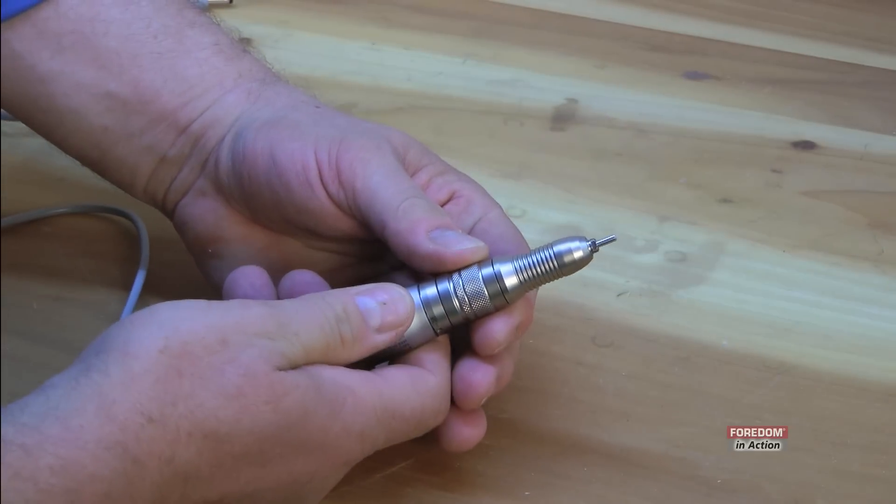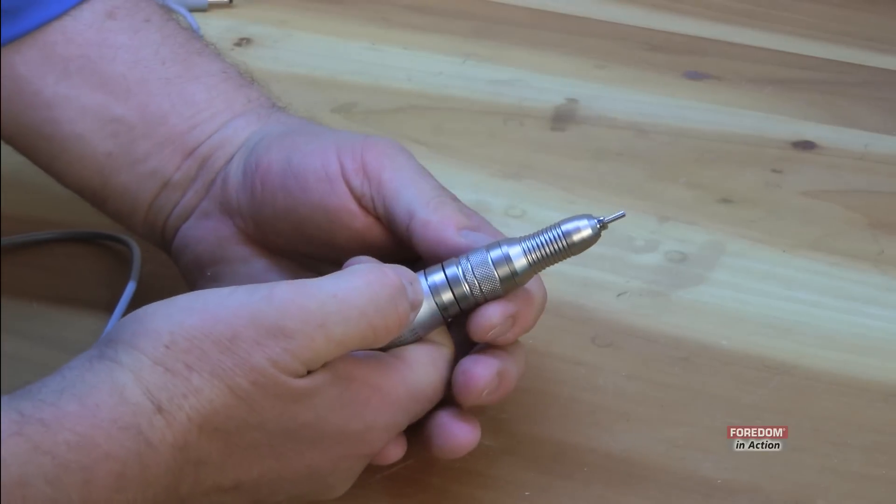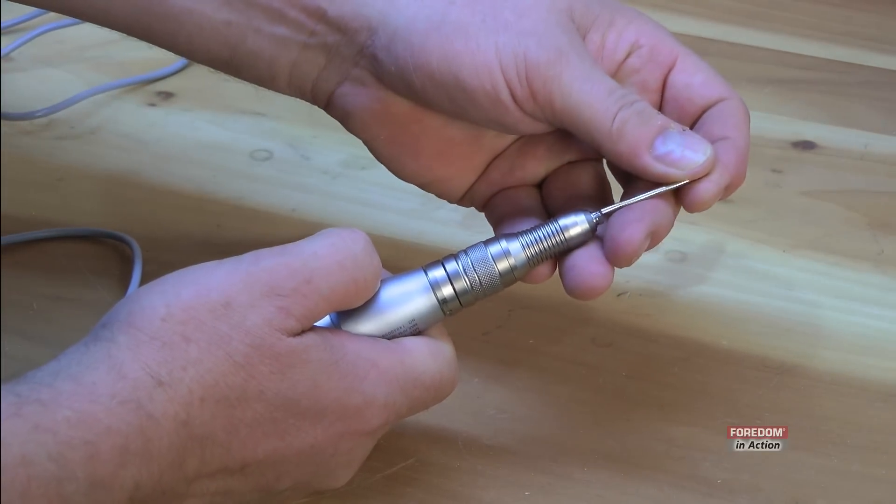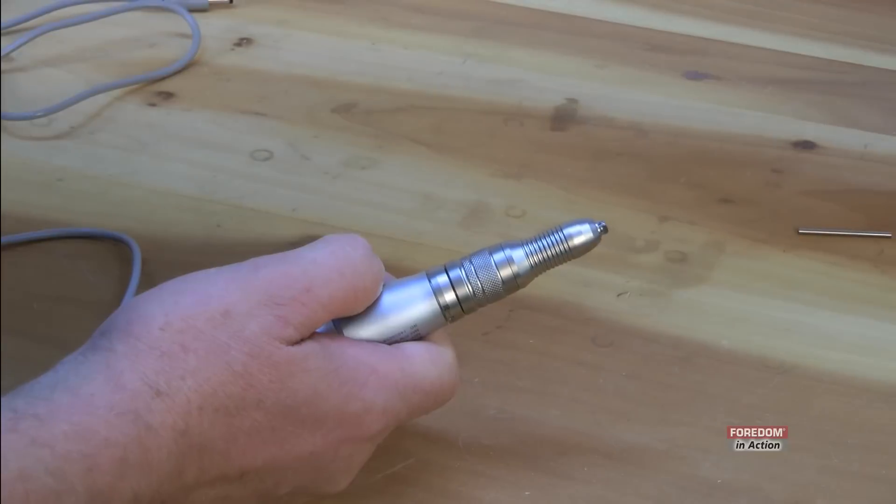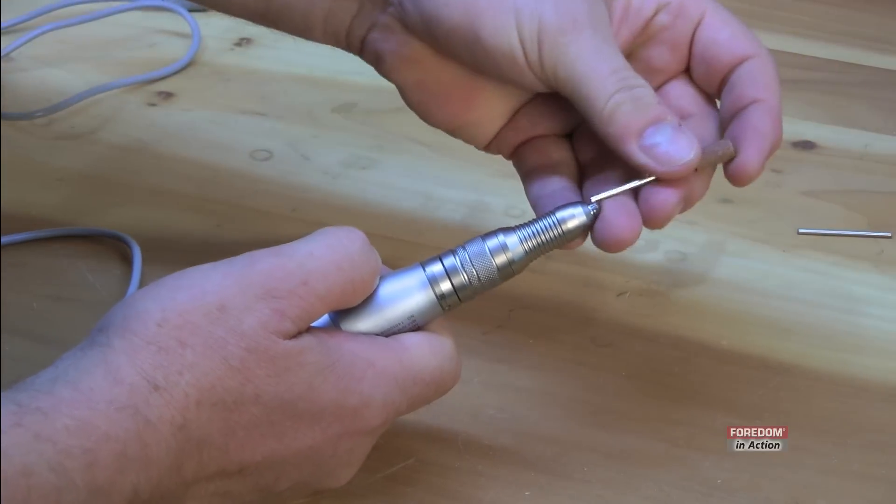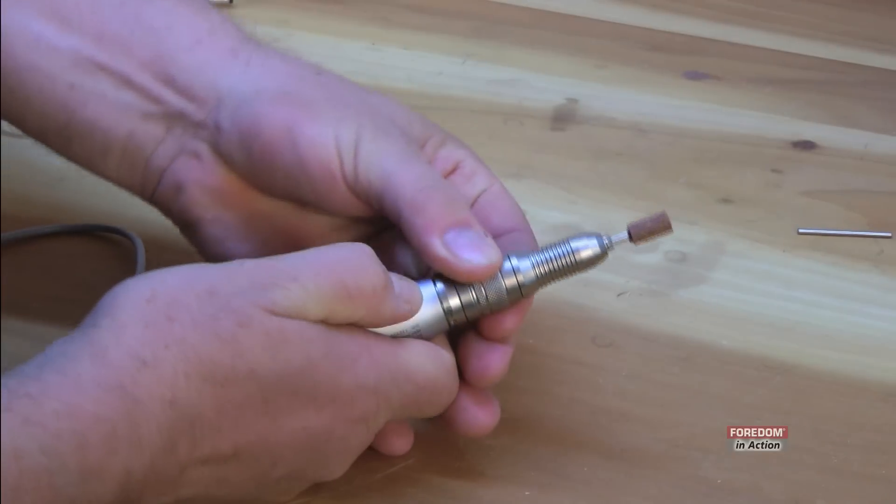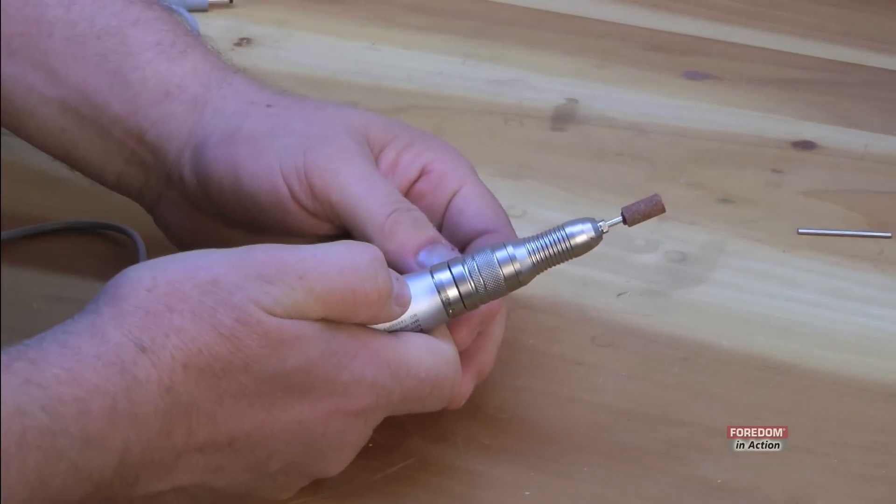To change out the burrs, you give a quick twist on the collar clockwise and the collar opens. Change it to another burr. Put it in. Bottom it out. Close it. And it's secure and ready to go.